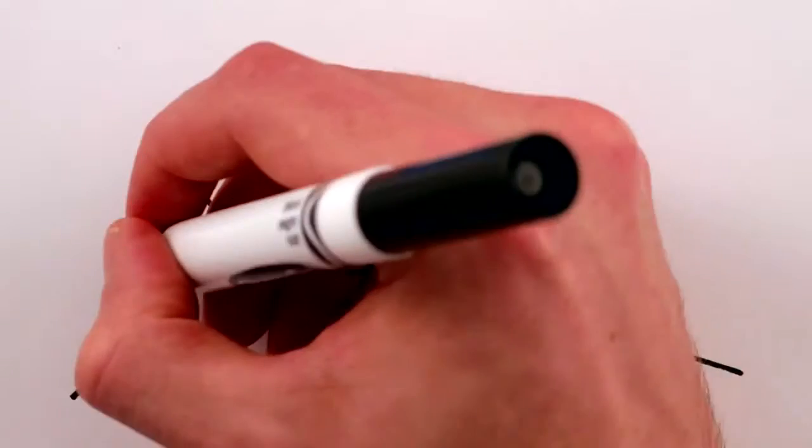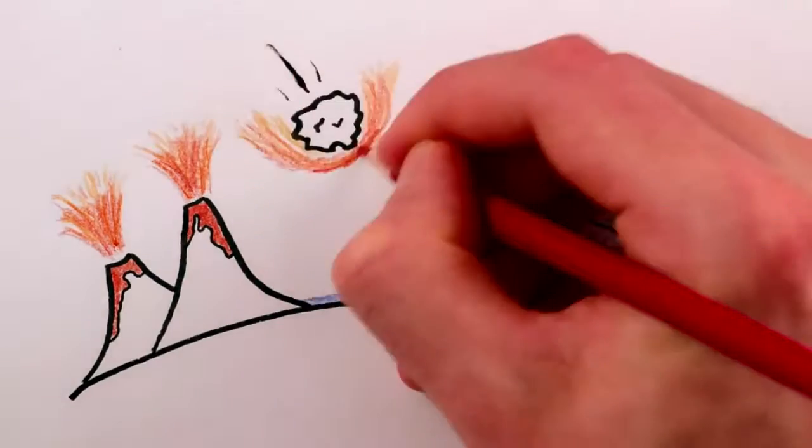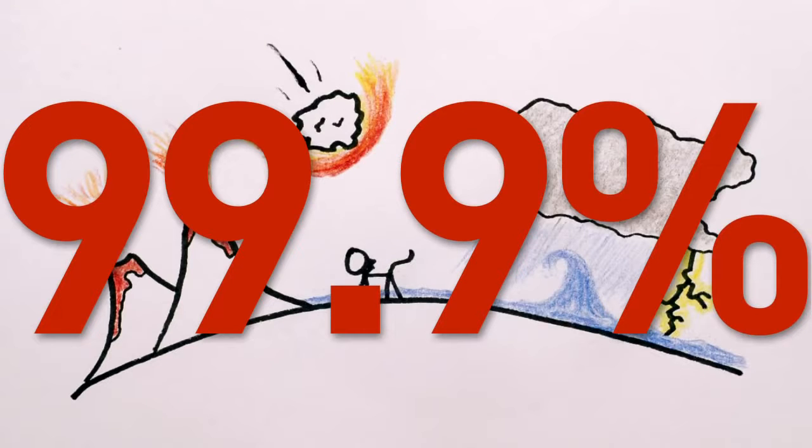Ecological devastation exacted by volcanoes, climate change, earthquakes, tsunamis, storms, and especially killer asteroids have left extinct 99.9% of all species that have ever lived here.